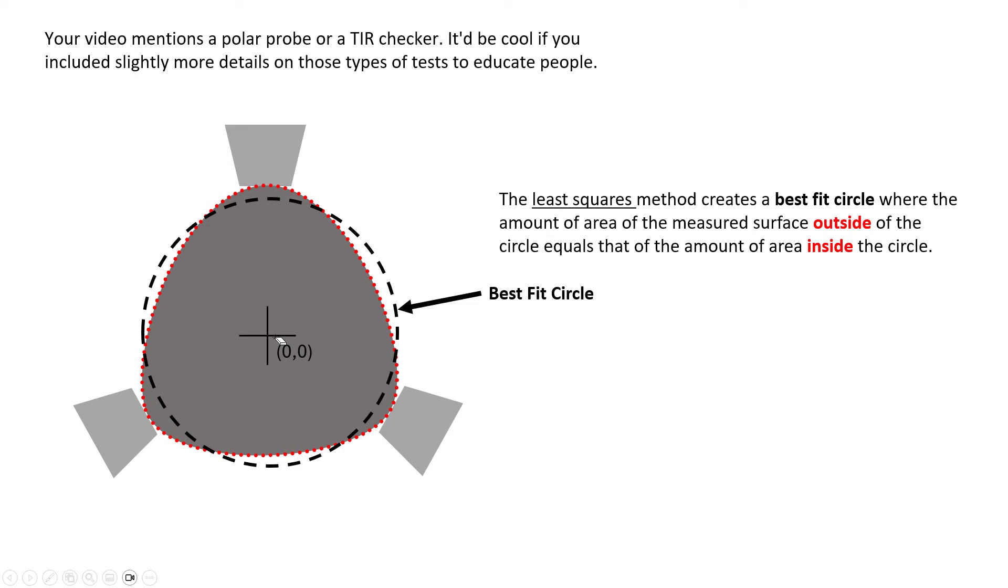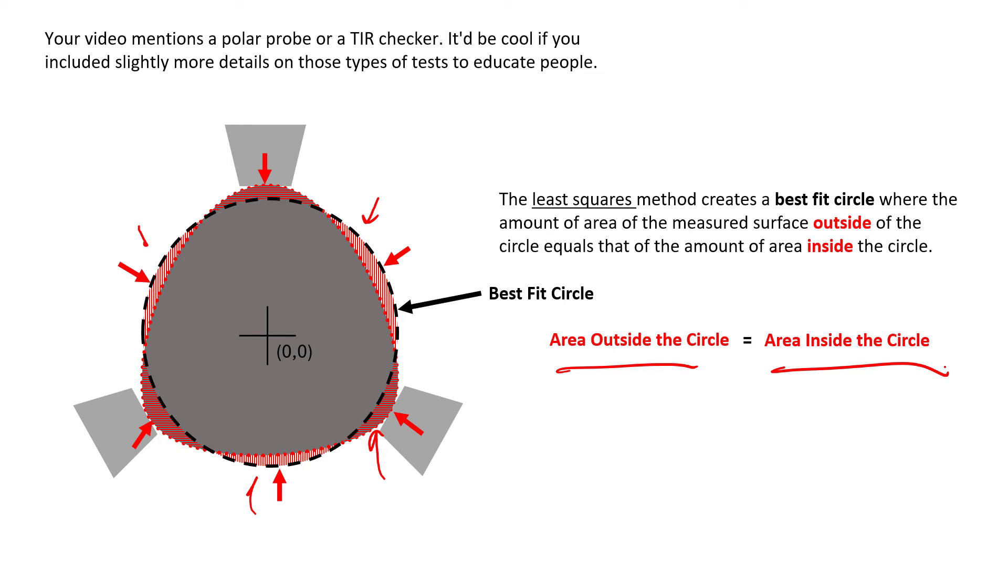So what does that really mean? We're going to draw a best fit circle. That best fit circle can be up over here, it can be down over here, it can be small, it can be big. It's going to iteratively apply these circles until it finds the best circle, the best fit circle, and that's where the area outside that circle, so these three areas, if you add those three areas up and they equal the area inside the best fit circle, these three areas here, if those areas equal each other then we have a least squares method best fit circle.